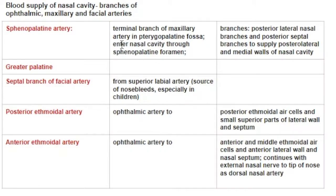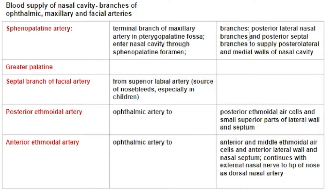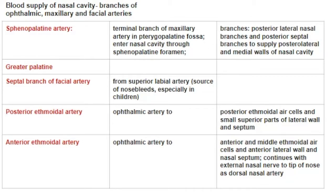The sphenopalatine artery is one of the terminal branches of the maxillary artery in the pterygopalatine fossa. It enters the nasal cavity through the sphenopalatine foramen in the posterior superior aspect, and here it gives two branches: the posterior lateral nasal branches and the posterior septal branches. The posterior lateral nasal branches supply the posterior part of the lateral wall, and the septal branches supply the nasal septum.